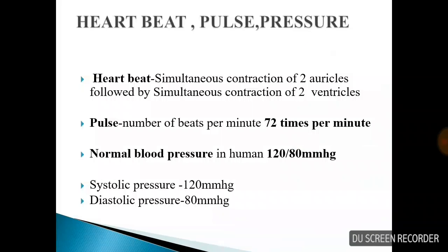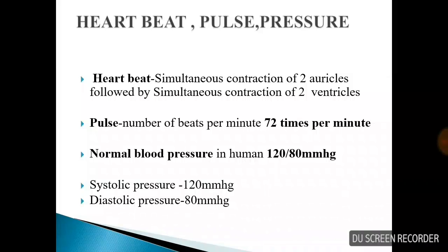This is called pulmonary circulation. Next: heartbeat and heart pulse. The heartbeat involves simultaneous contraction of two auricles — left auricle and right auricle, or left atrium and right atrium — simultaneously, followed by left ventricle and right ventricle contracting. Pulse is the number of heartbeats per minute.